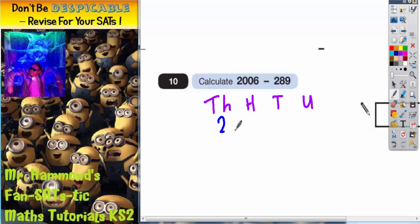So we've got two thousand and six, we're going to take away two hundred and eighty nine.